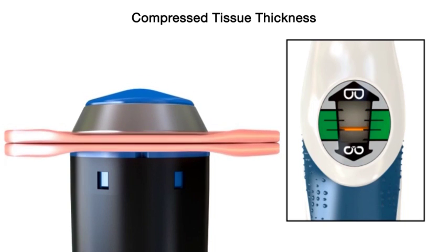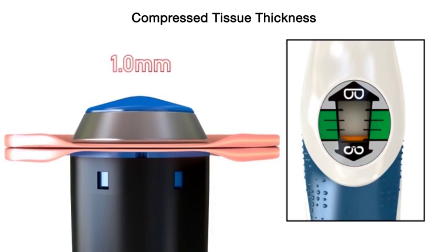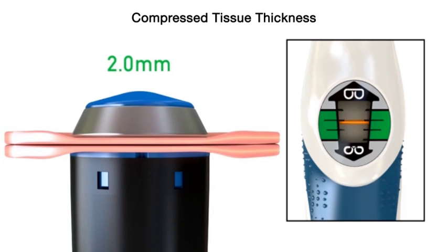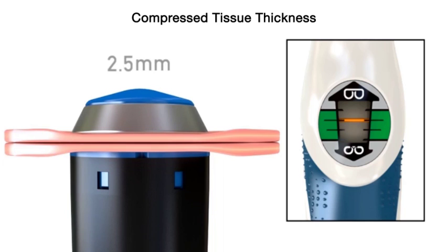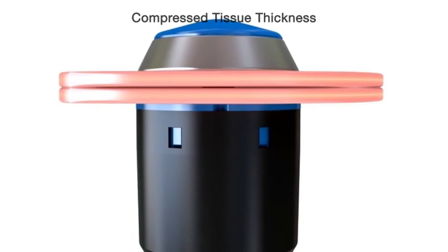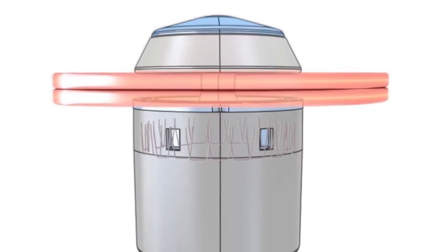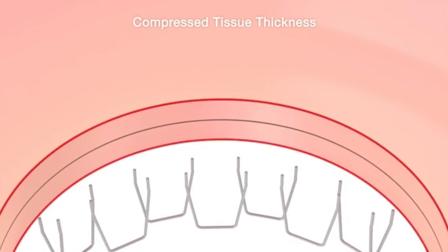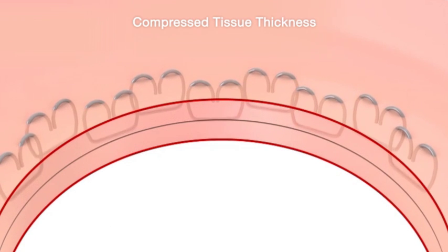Through adjustable height staples, the Ethicon Endosurgery ILS accommodates compressed tissue thicknesses anywhere between 1.0 and 2.5 millimeters. Adjustable height staples with a 5.5 millimeter open leg length are formed to the appropriate closed height based on the amount of compression applied to the tissue.